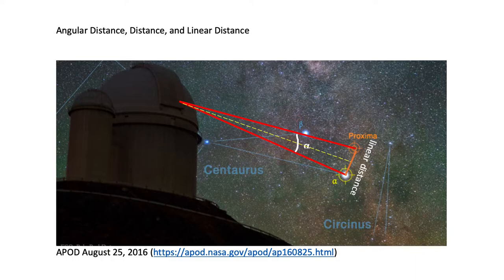Here we have an image posted on Astronomy Picture of the Day, August 25, 2016, and we are looking at two different constellations, Centaurus and Cercinus.